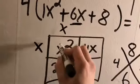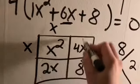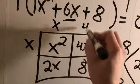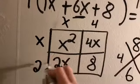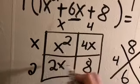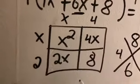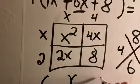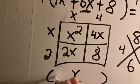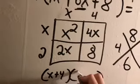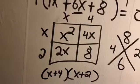I know x times x is x². 4 times x is 4x. 2 times x is 2x. And then 4 times 2 is 8. So I have my factors of x + 4 and x + 2.